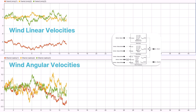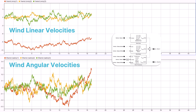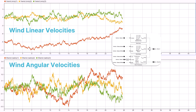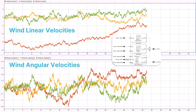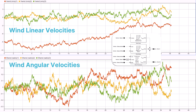The wind shear model block adds wind shear effects to the wind profile. It models variations in wind speed and direction with altitude. The wind turbulence model block introduces stochastic turbulence using the Dryden spectral model. It generates turbulence by filtering band-limited white noise through shaping filters.